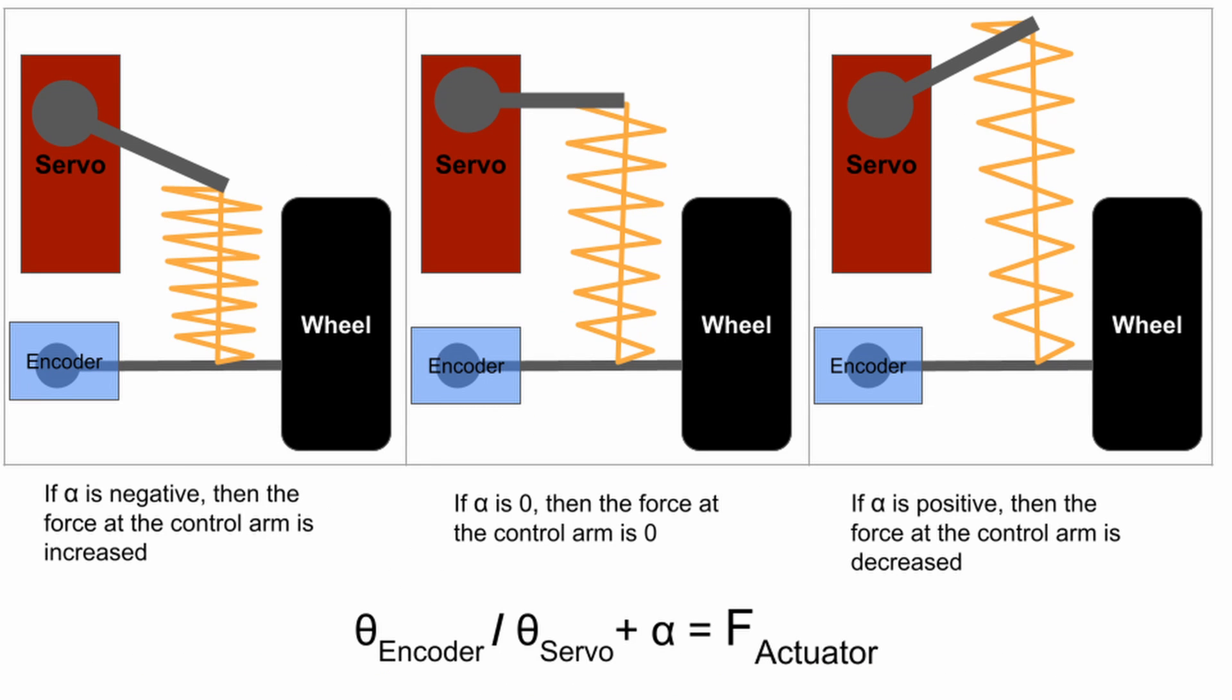This slide shows three possible states for alpha. When alpha is negative, more force will be provided by the servo to the wheel, i.e. the spring will be more compressed. When alpha is zero, no actuator force will be provided, and the spring will be kept at a constant level of compression that is essentially only the gravitational compression from the weight of the car. And if alpha is positive, then the spring force will actually be decreased and the servo will essentially be lifting the spring.